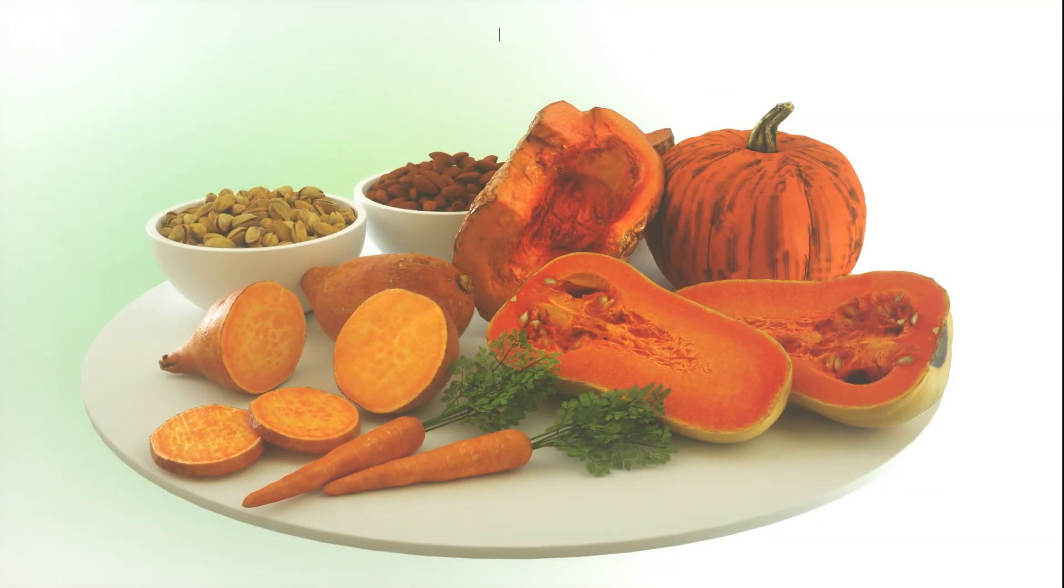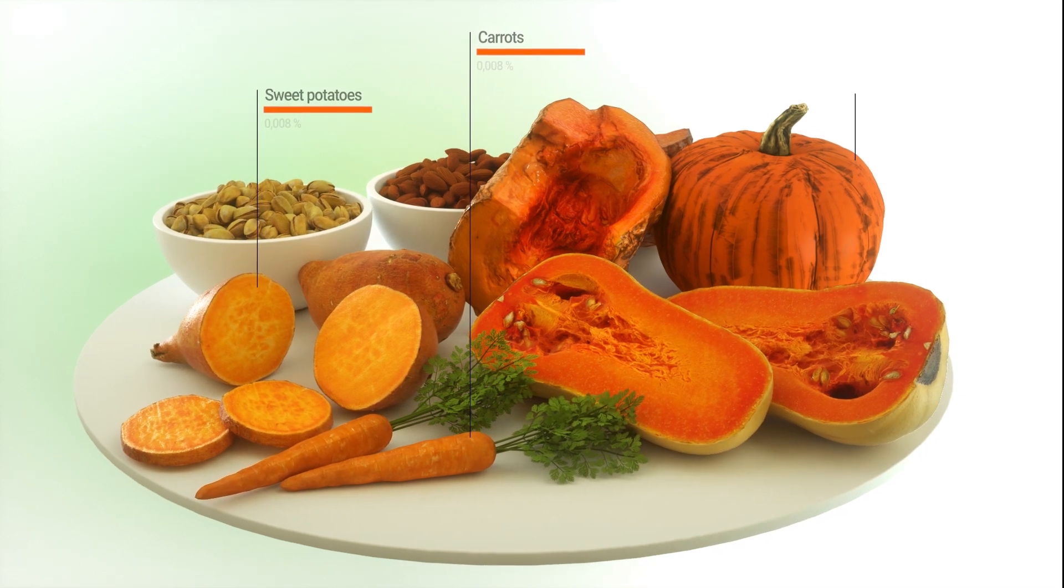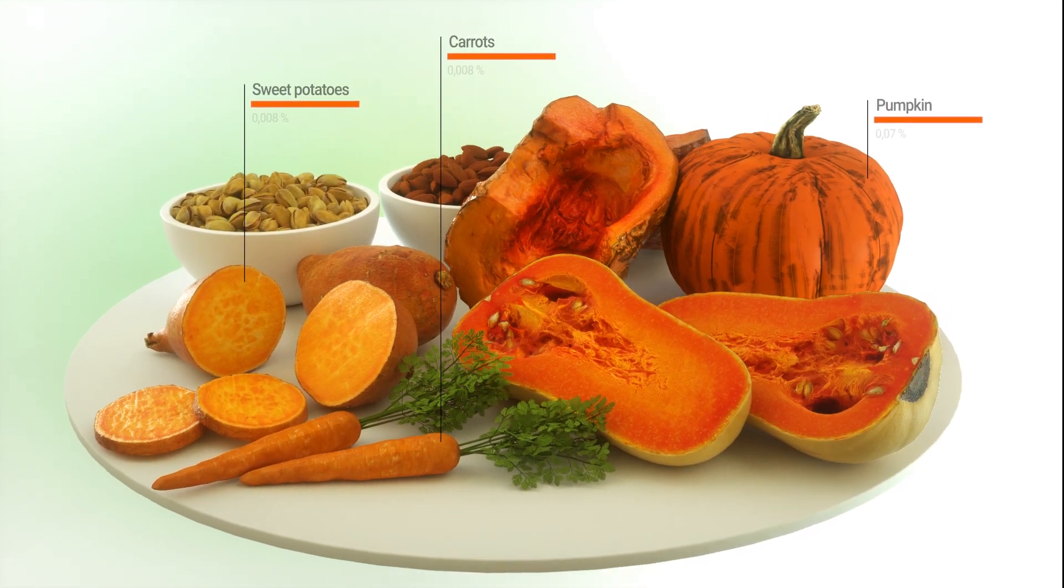Beta-carotene, available in foods like carrots, sweet potatoes, and pumpkins, provides numerous health benefits.